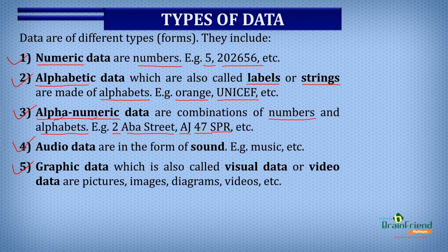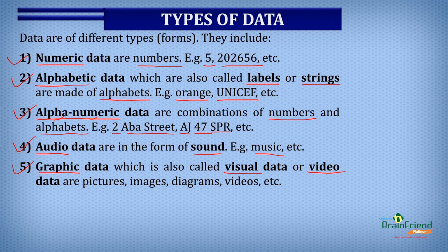The next type of data is audio data, which refers to data in the form of sound — for example, music. And finally, we have graphic data, which is also referred to as visual data or video data. Some examples of graphic data are pictures, images, diagrams, videos, and so on.